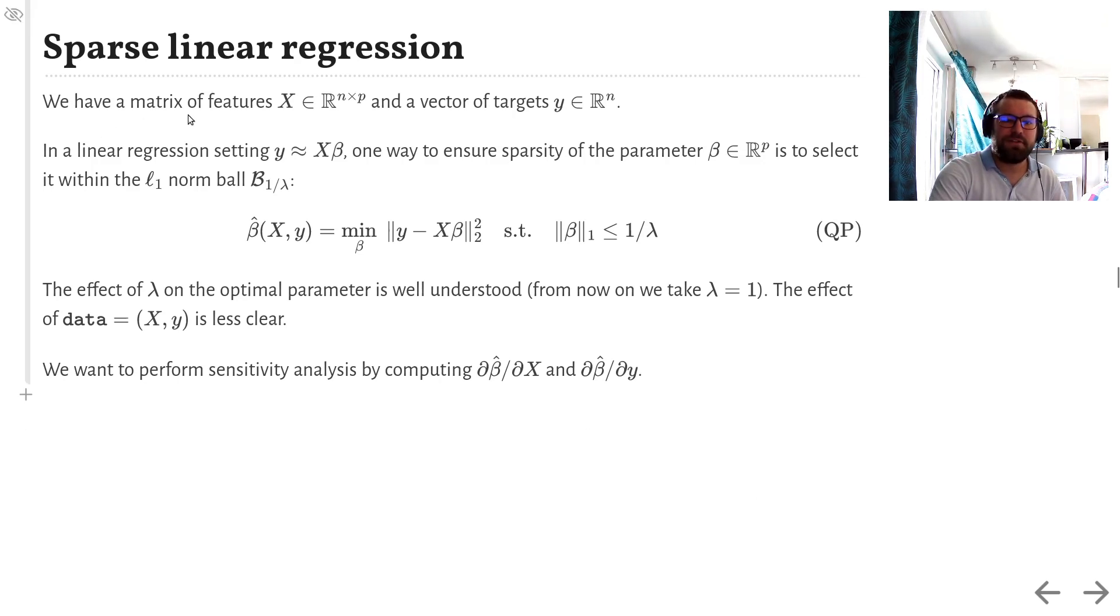Lasso is just a way to tackle sparse linear regression. Suppose we have a matrix of features X, with n rows and p columns, along with a vector of targets y. Linear regression means looking for an approximation of y that has the form X times beta, where beta is a vector of weights. And in many situations, we want this vector of weights to be sparse, to only have a few non-zero coefficients. This helps with computations, and it also increases the interpretability of the results.